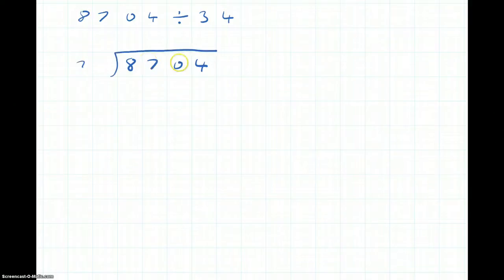Divided by 34. Before we go anywhere, we need to write down the 34 times table. One 34 is 34. Two of them make 68.